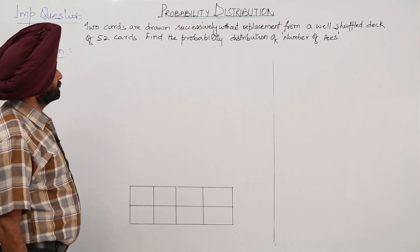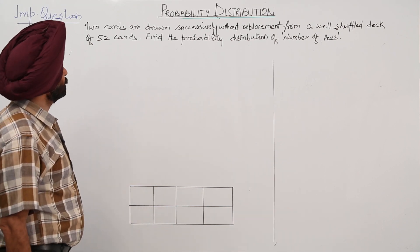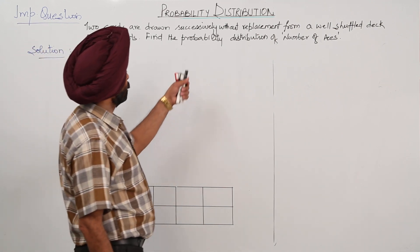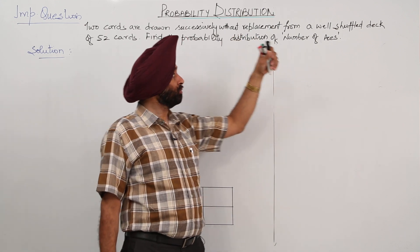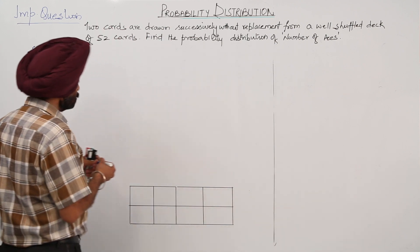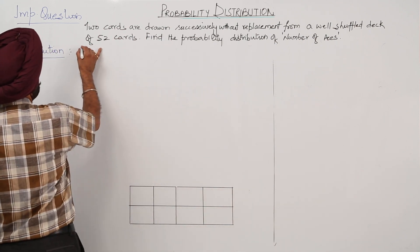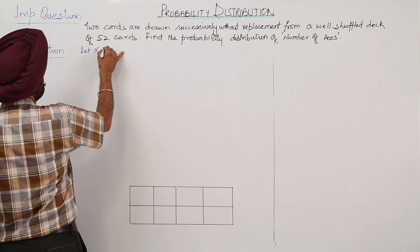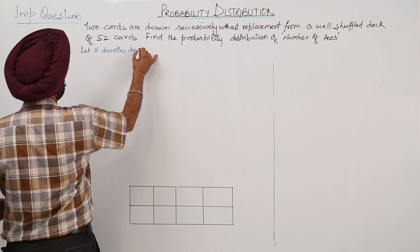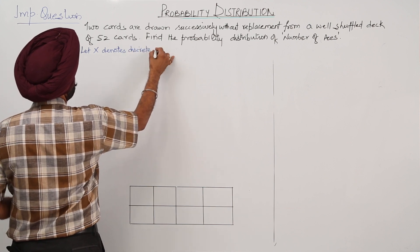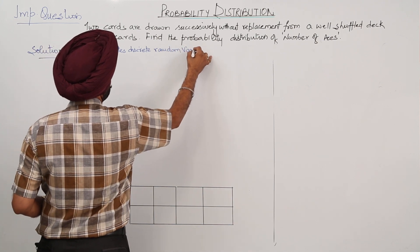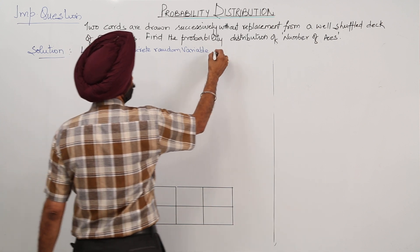2 cards are drawn successively without replacement from a well shuffled deck of 52 cards. Find the probability distribution of the number of aces. The key condition here is 'without replacement' — give a lot of stress on this part. Let X denote the discrete random variable: number of aces.